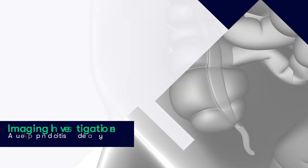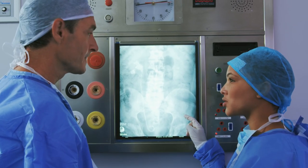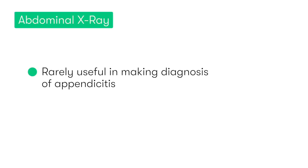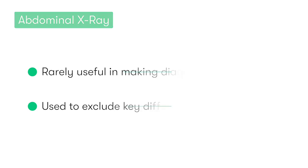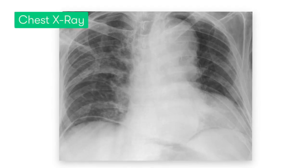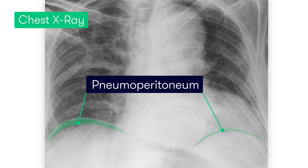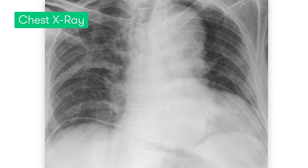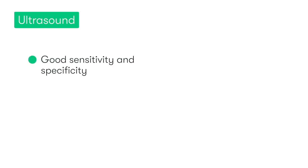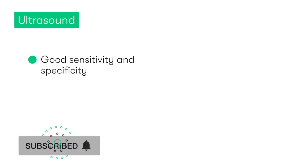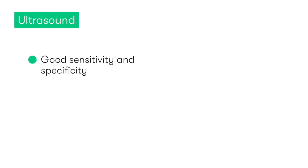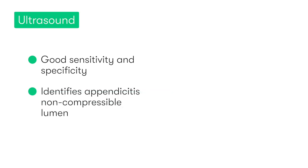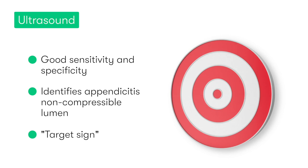Now let's look at the imaging we can do. Abdominal X-rays are rarely very useful in making the diagnosis of appendicitis — typically we use them to help exclude other key differentials such as intestinal obstruction. We could also perform a chest X-ray to look for evidence of a pneumoperitoneum, indicative of a perforation of the GI tract. Ultrasound has been shown to have a reasonably high sensitivity and specificity in diagnosing acute appendicitis — the ultrasonographer looks to identify the non-compressible tubular structure of the inflamed appendix and obtains a cross-sectional image of the tube, which we call the target sign.